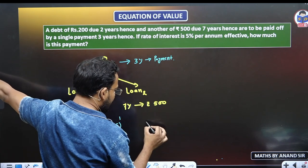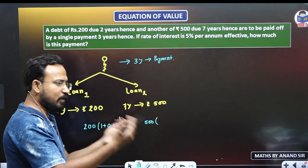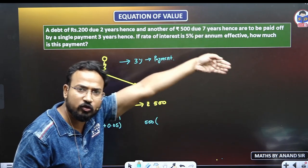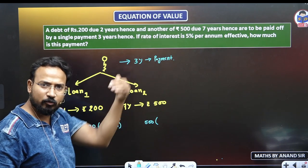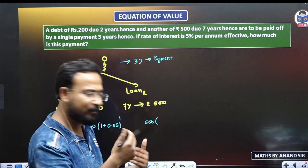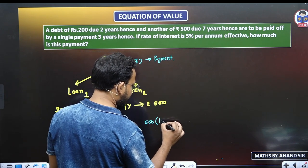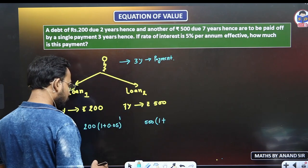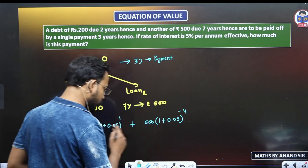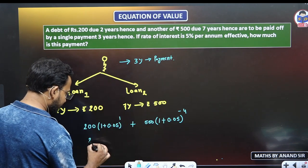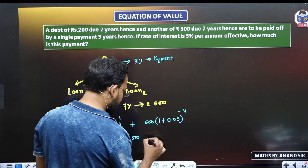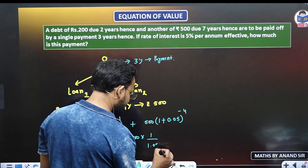I had to pay 500 rupees for 7 years. But I am giving money after 3 years, so how many years before am I paying? I have to pay 4 years early. So we will apply the present value formula: 500 into 1 upon (1.05) raised to power 4. And for the 200 rupees: 200 into (1.05) raised to power 1.